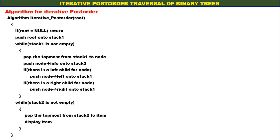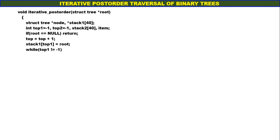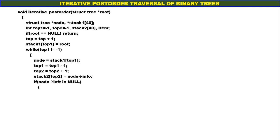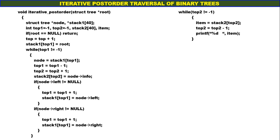Now the C function. Stack 1 of size 40, stack 2, top1, top2. If root is equal to null, return. Otherwise push root onto stack 1. While stack 1 is not empty, pop the topmost from stack 1 to node. Push node info onto stack 2. If node left is not equal to null, push node left onto stack 1. If node right is not equal to null, push node right onto stack 1. Go on doing this until stack 1 becomes empty. When stack 2 is not empty, go on popping and displaying. This will display all elements popped from stack 2 in post order. The function for iterative post order is quite simple.